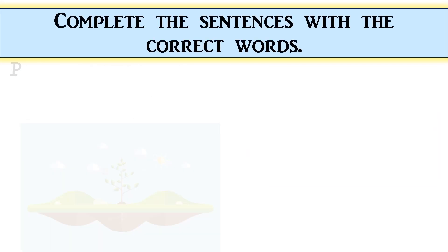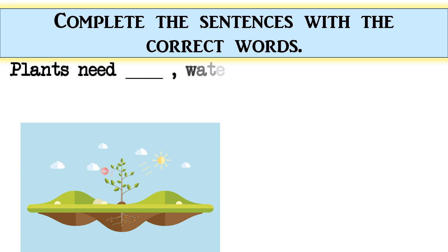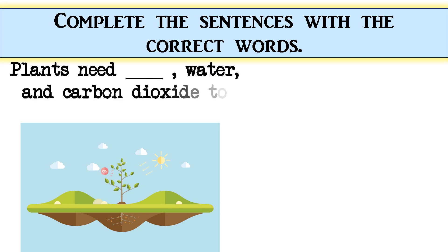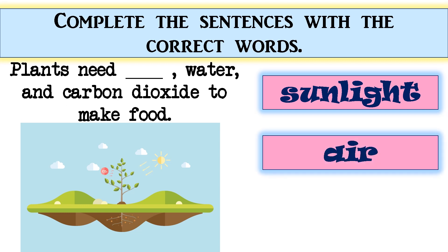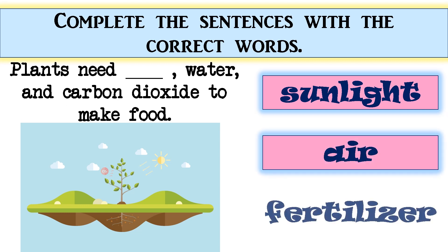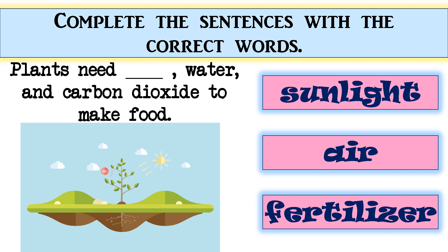Plants need blank, water, and carbon dioxide to make food. The options are: sunlight, air, or fertilizer. The correct answer is sunlight. Good job!